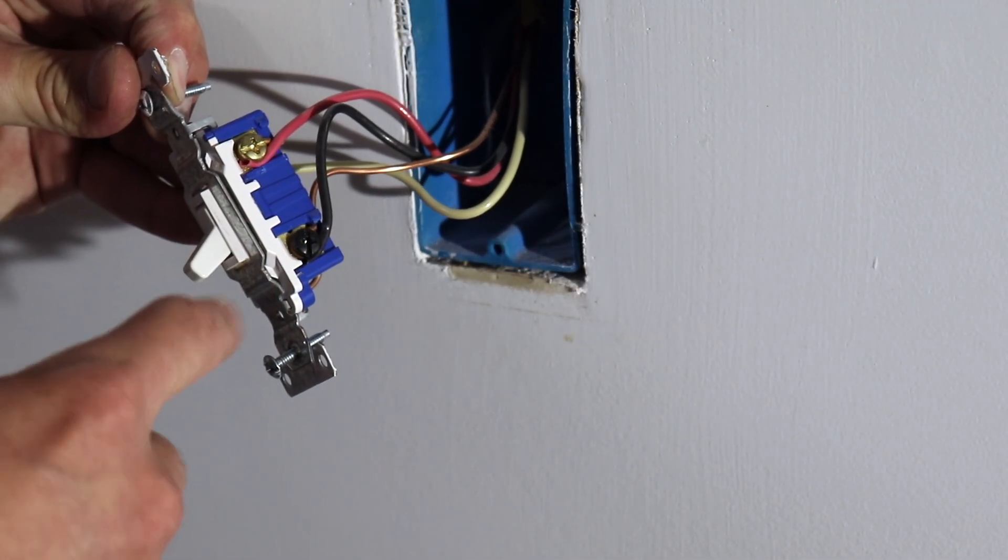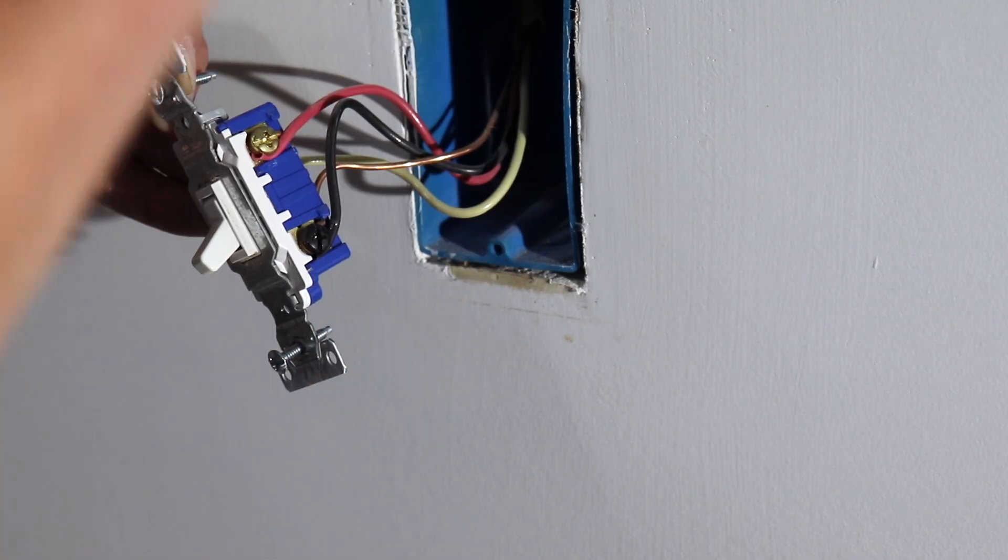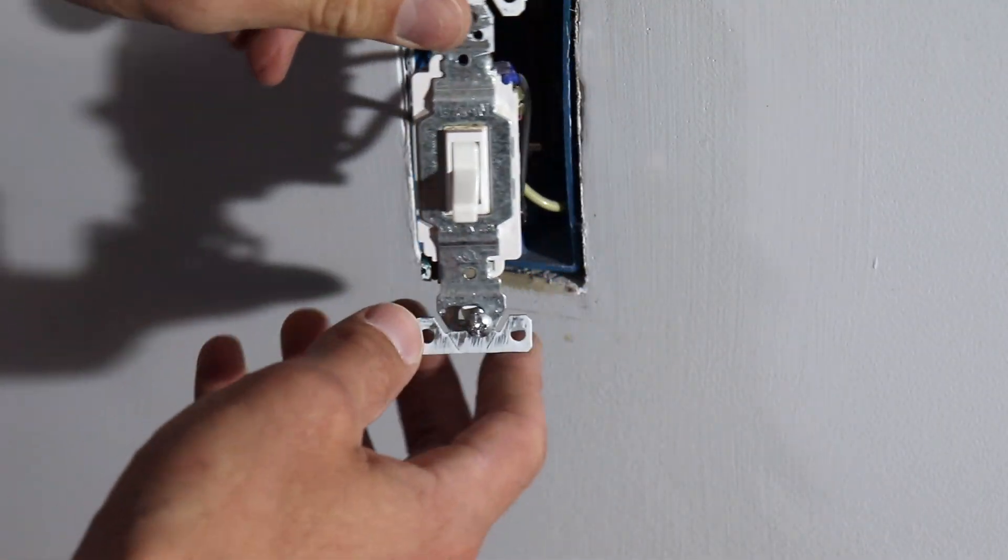Your common terminal is going to be either power coming into the switch or power going out to the light that it controls. And then obviously we have our ground down here as well.